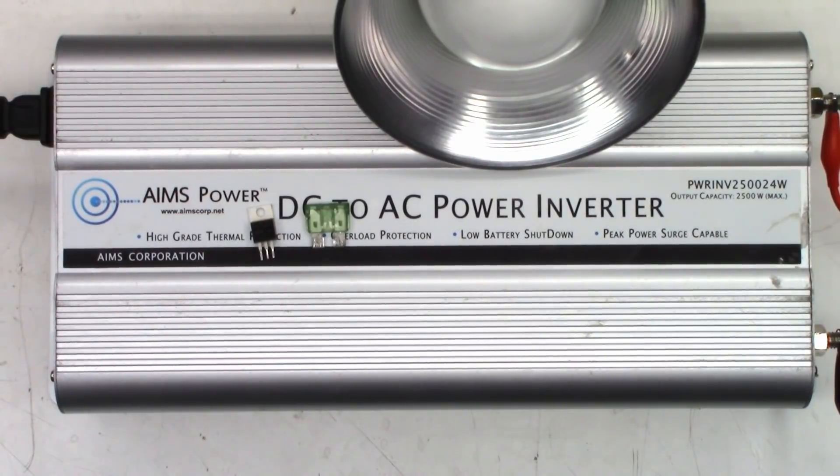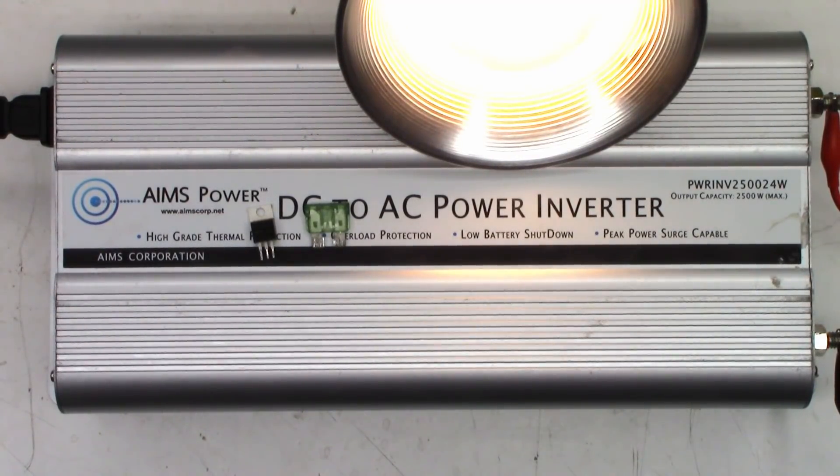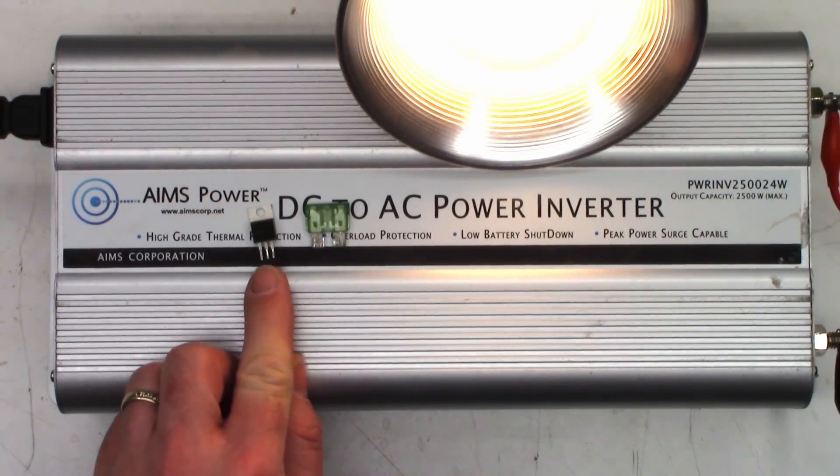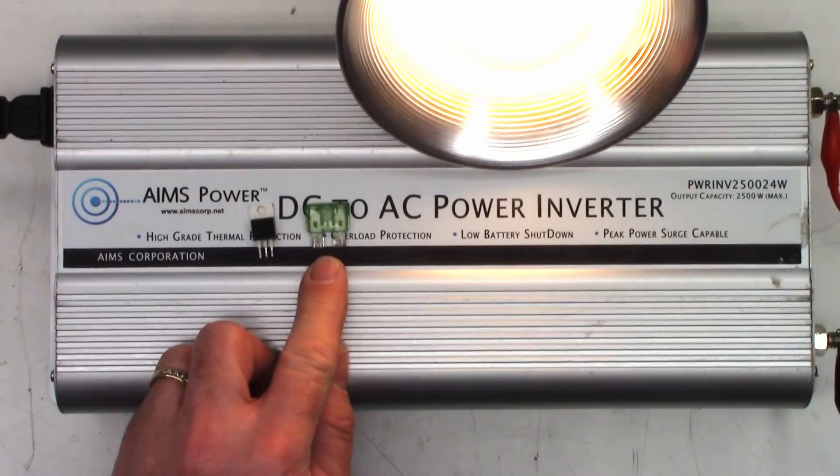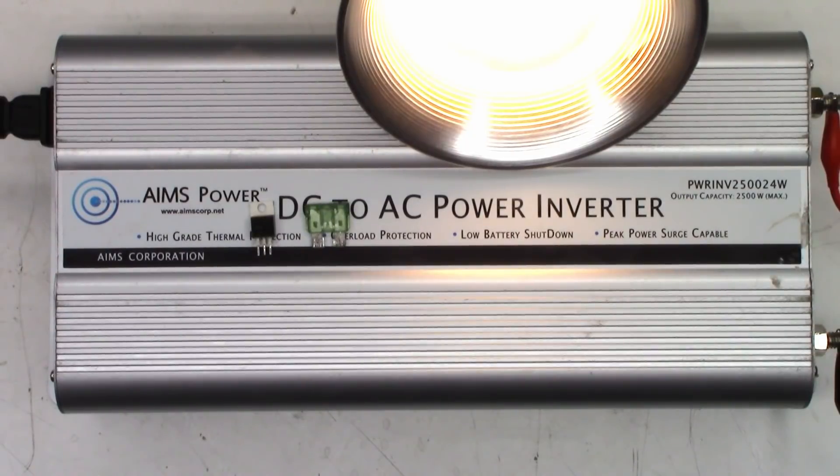Well, there it is all back together. The Ames PWR INV250024W. 24 volt, 2500 watt inverter. It's ready to go. We'll switch the power on. I still have the 60 watt incandescent lamp in there. It had a couple of bad FETs and a blown input fuse. I lost one of the FETs, however, so I only can return one to the customer. Anyhow, that's it. It's up and running. Ready to send back to my customer.